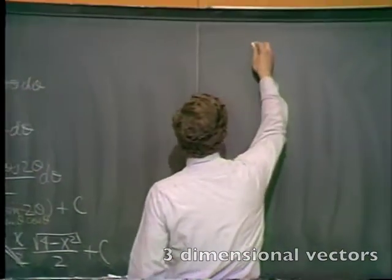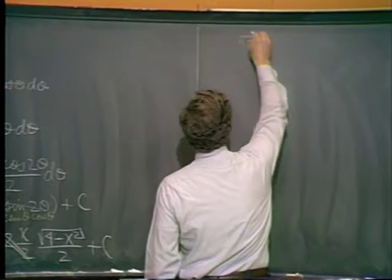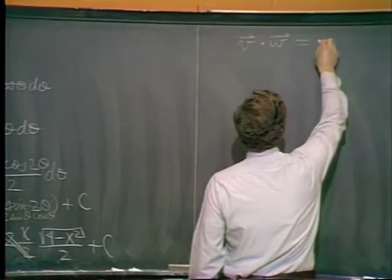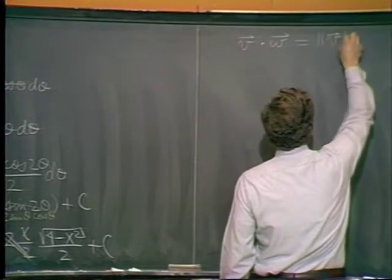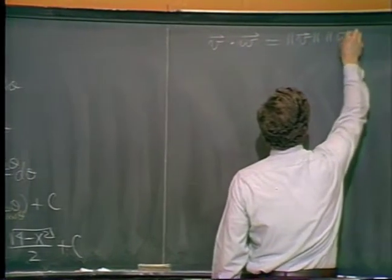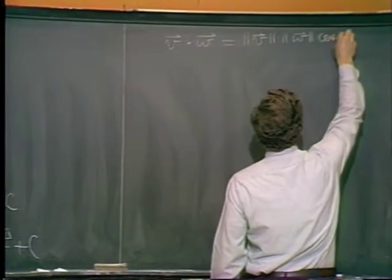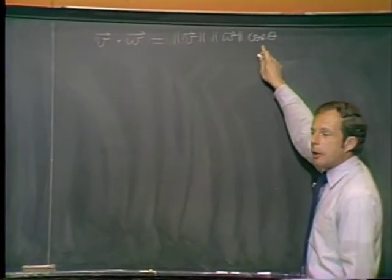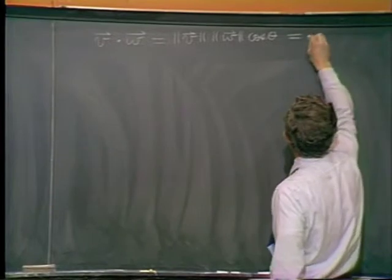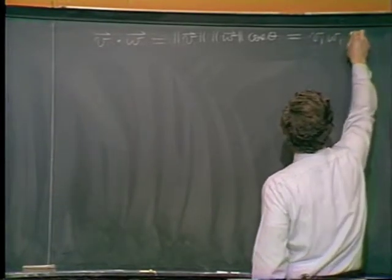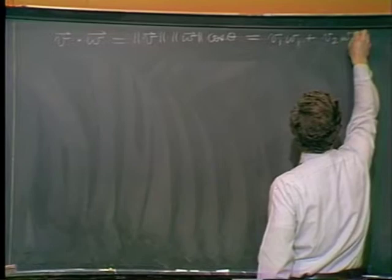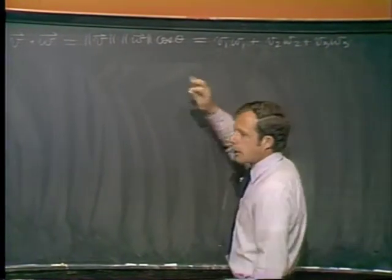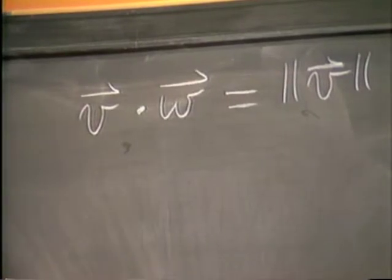Last time we talked about dot product. For example, if you've got a couple of vectors v and w, the dot product is the product of the lengths times the cosine of the angle between them in the plane of the vectors. That's the geometric representation. Algebraically, to compute dot products you take the sum of products of corresponding components. Both of these we had on the board yesterday. I'll just use those for reference today.